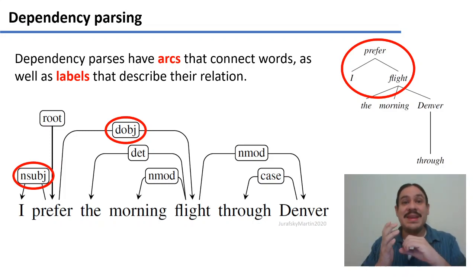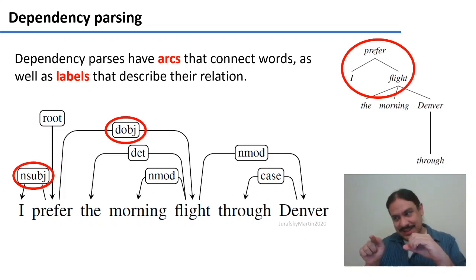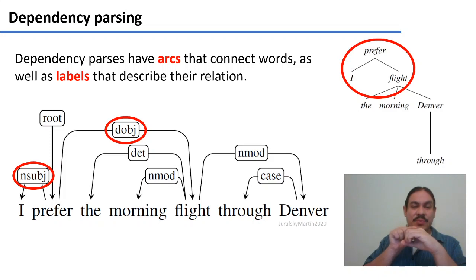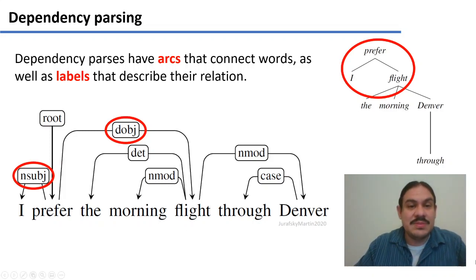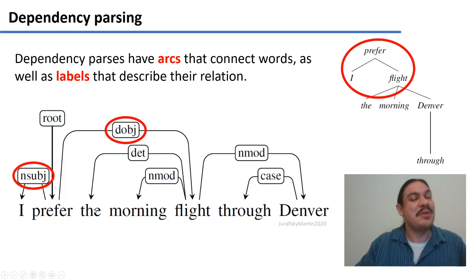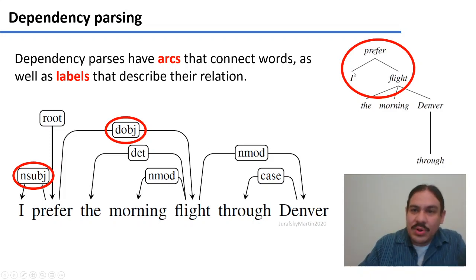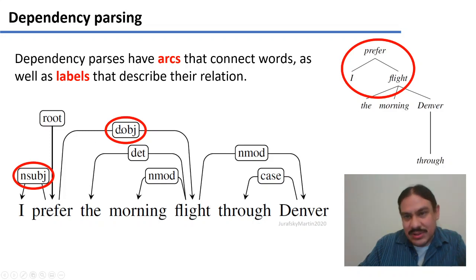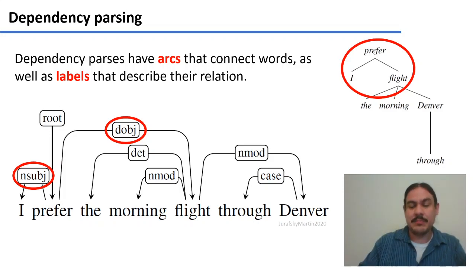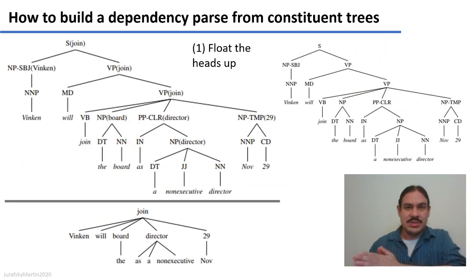The label on that arc is 'subject'. We could have that for many other relationships — for example, the direct object of 'prefer' is 'flight', so we connect the head 'prefer' to the dependent 'flight' with the label 'direct object'. Similarly, 'flight' is connected with the label 'determiner' to 'the'. All words are connected to other words through some relation described by a label, and the verb is thought of as the root that anchors the sentence. So how do we go from constituency trees to these dependency parses?